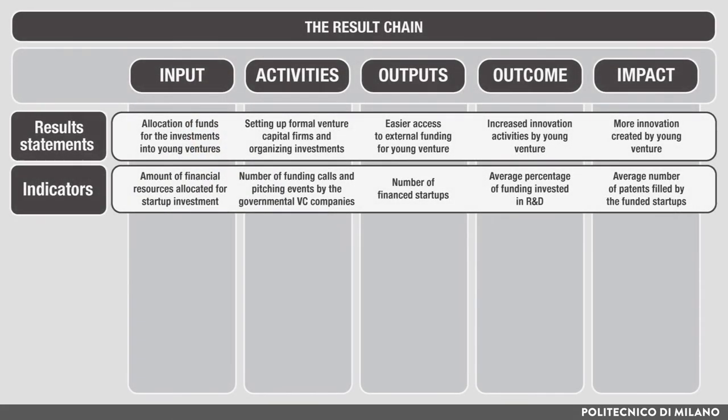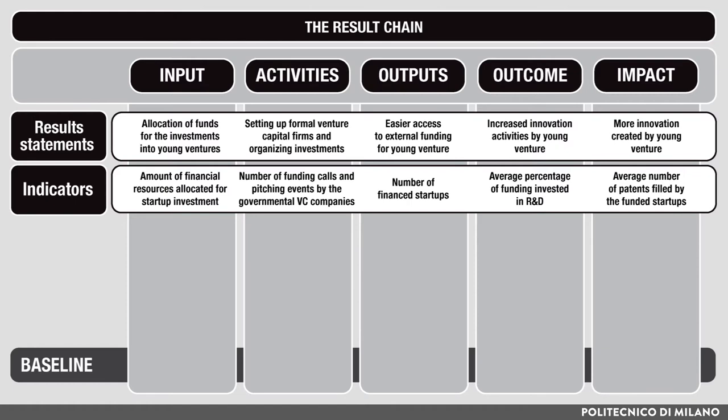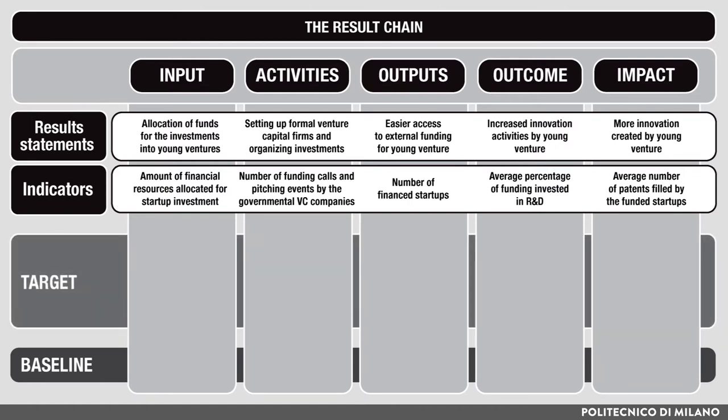Hence, we should populate two more columns for each of the indicators: one stating the baseline level at the beginning of the policy program, and the other the target level at the appropriate time point of the policy program process.